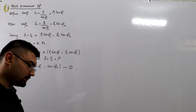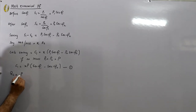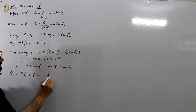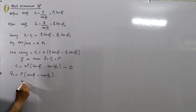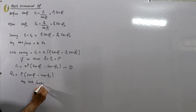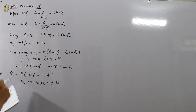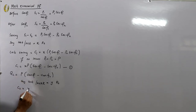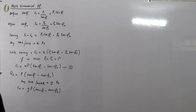The leading kVAr required from the capacitors being installed is P × [tan(φ1) − tan(φ2)], where φ1 and φ2 are the power factor angles. If the cost per kVAr of the capacitance improvement devices is Rs. Y per annum, then the annual cost C2 of those devices equals Y × P × [tan(φ1) − tan(φ2)].